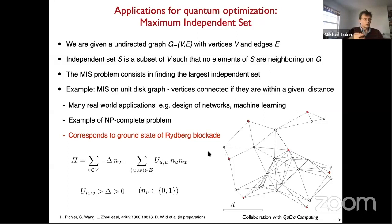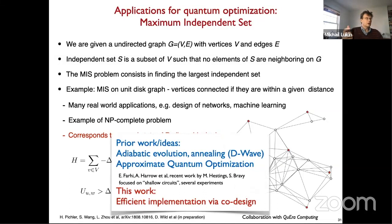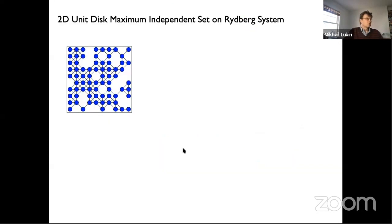Specifically, when exciting atoms under the Rydberg blockade, you want to excite as many atoms as possible but cannot excite two within the blockade radius. This means MIS on the unit disk graph corresponds to the ground state of the blockade Hamiltonian. The question is: can we use our platform to leverage quantum hardware to improve optimization? The approaches we want to explore involve both adiabatic evolution and QAOA.